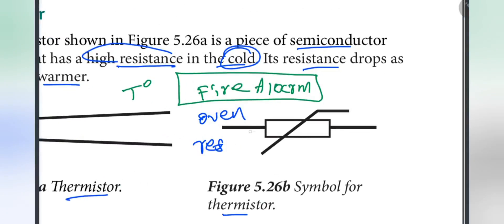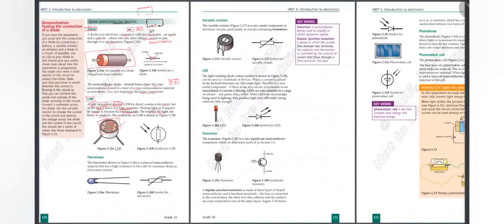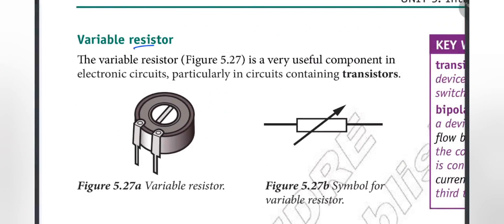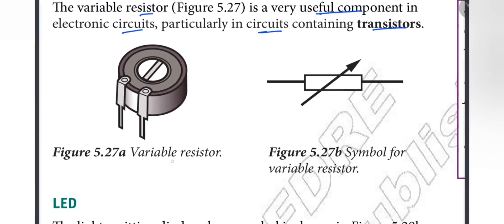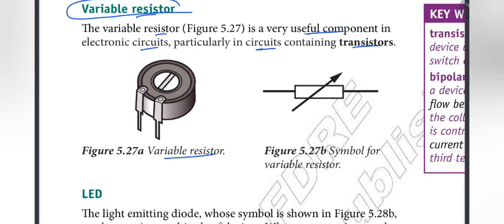This is the symbol. The variable resistor is a very useful component in electronic circuits, particularly in circuits containing transistors. You can change the resistance, change the current flow, regulate and adjust the current because of the resistance. The more resistance, the less current flows.